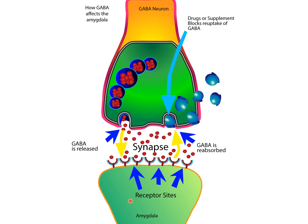I'm going to go through how the whole process starts and ends with GABA being released and anxiety being reduced. This is the GABA neuron and this is the amygdala. The GABA neuron projects to the amygdala and communicates via the synapse.